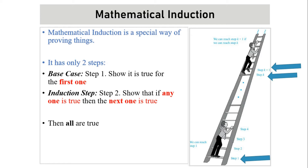Whatever value you are given in your equation, you will always pick the first value and try to show that it is true. Then comes the next step, called the induction step. This is step two: you show that if any one case is true, then the next one is also true. Finally, you conclude that all cases are true.